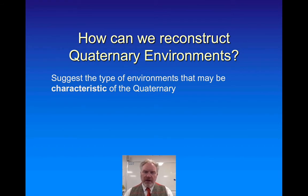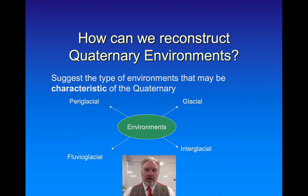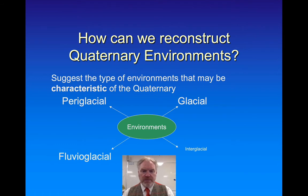The types of environments characteristic of the Quaternary are related to the fluctuating climatic conditions that existed at this time. The environments we're talking about are periglacial environments, glacial environments, fluvioglacial environments, and interglacial environments. Notice how the word 'glacial' appears in all four descriptions — the Quaternary is dominated by periods of glaciation.